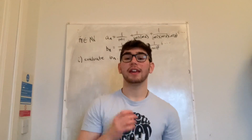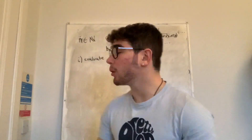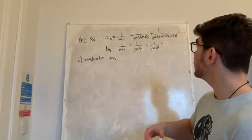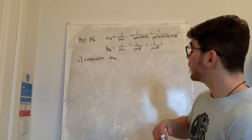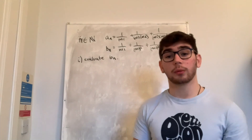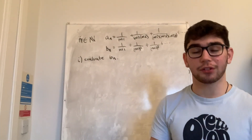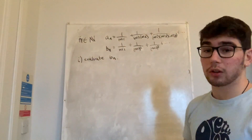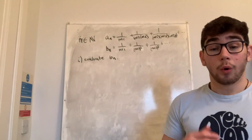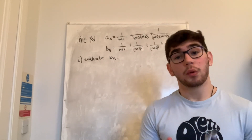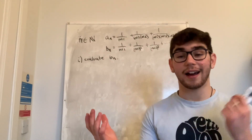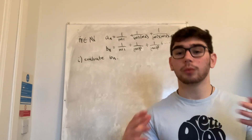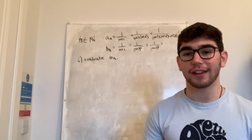Today we're going to prove that e is irrational. We'll consider two series, aₙ and bₙ. aₙ is 1/(n+1) + 1/((n+1)(n+2)) + 1/((n+1)(n+2)(n+3)) + ⋯, and bₙ is 1/(n+1) + 1/(n+1)² + 1/(n+1)³ + ⋯. We'll first evaluate bₙ, then show aₙ lies between 0 and bₙ, then consider n!·e, and finally use those facts to prove e is irrational.